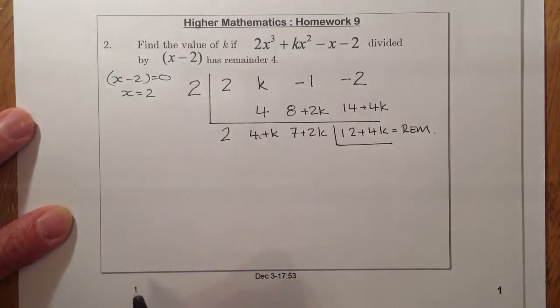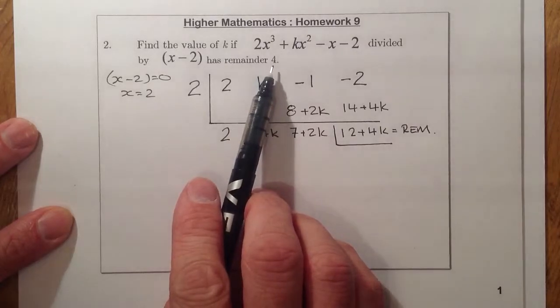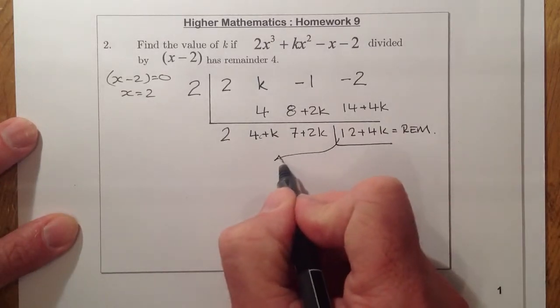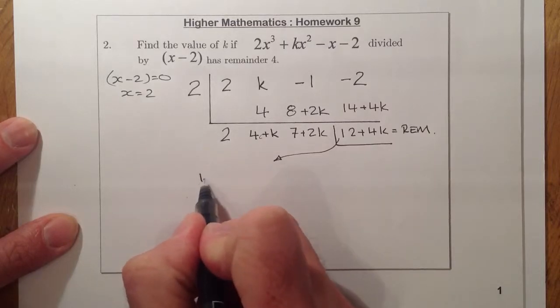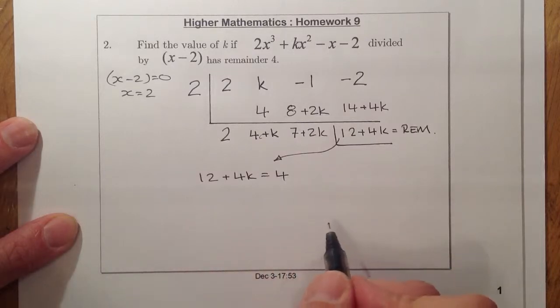Okay, so that's been processed through, but I still need to work out what the value of k is. And from the question, I've been told that the remainder is equal to four. So what I can then do from there is say that 12 plus four k equals four, which is from the question.